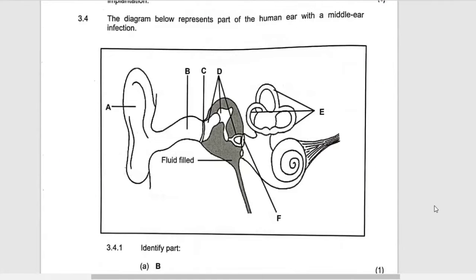Question 3.4. This is the structure of the ear. You need to know exactly what this is. They are saying that the diagram below represents the part of the human ear with the middle ear infection. What is A?